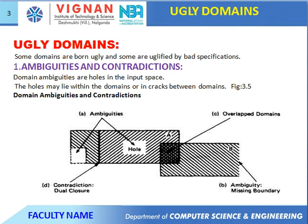Next major topic is ugly domain. Some domains are born ugly and some are made ugly by bad specification. First one is ambiguities and contradictions. A domain is ambiguous if it holds holes in the input space. The hole may lie within the domain or in a crack between domains.